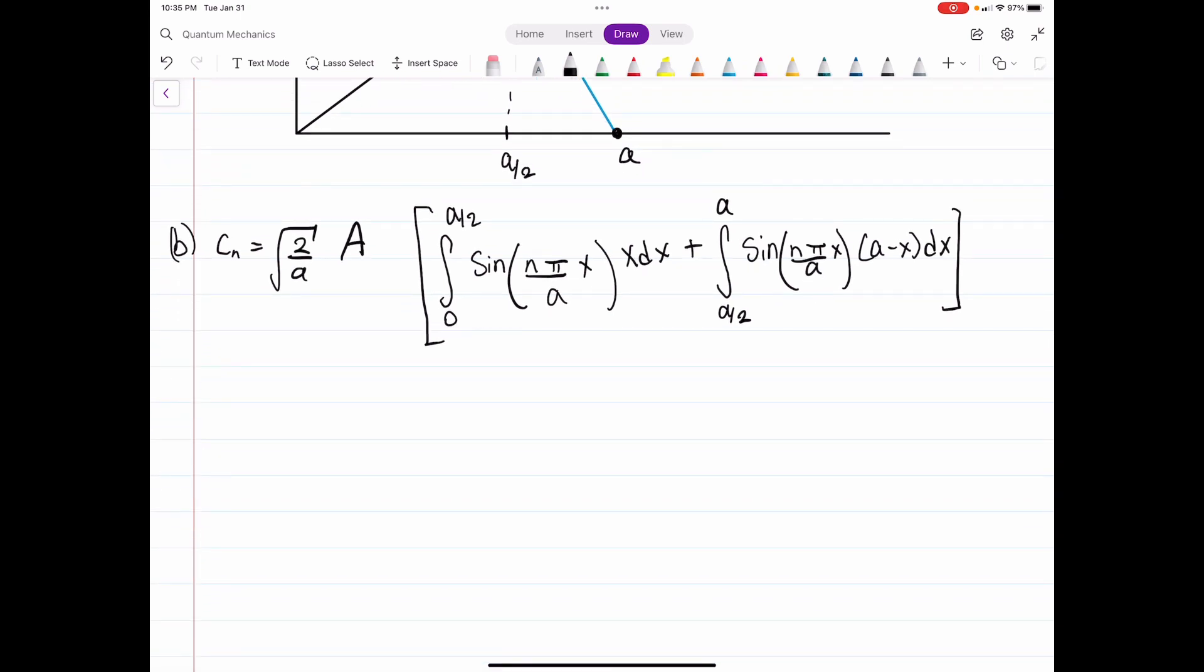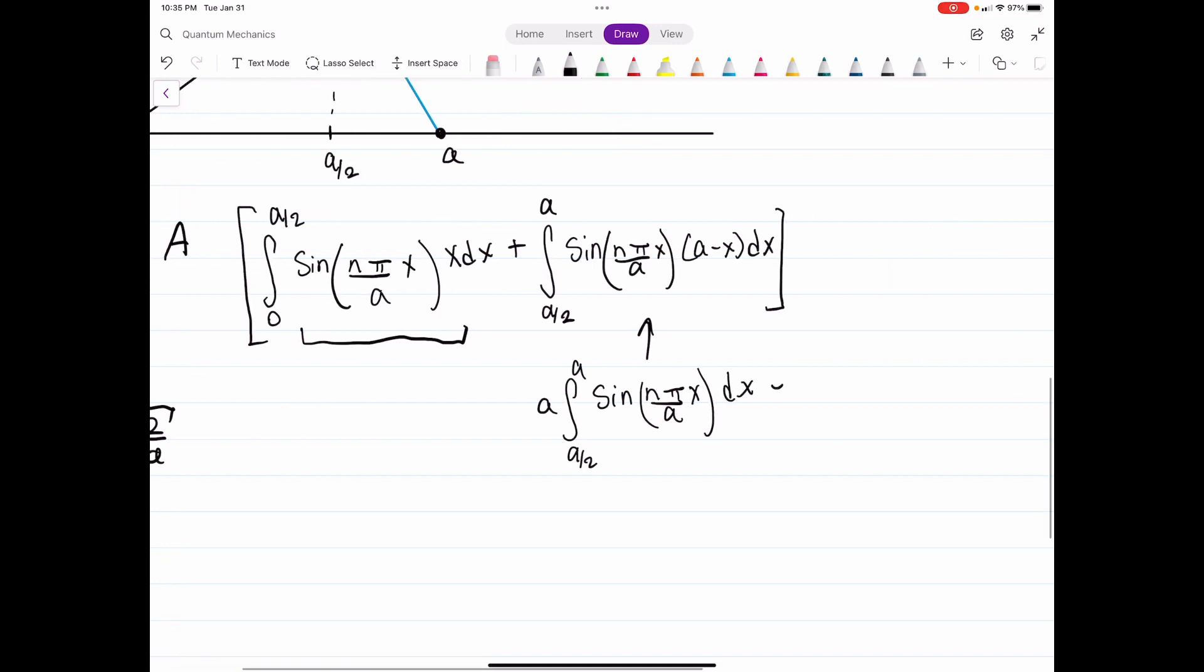So we can plug in what we know a to be. I think I'm going to just keep it as a for right now. And then, essentially, all you're going to have to really do is integrate this by parts. And then, over here, you'll break this up into two separate integrals. The a is a constant that can be factored out. And then minus x sine of n pi x over a dx.